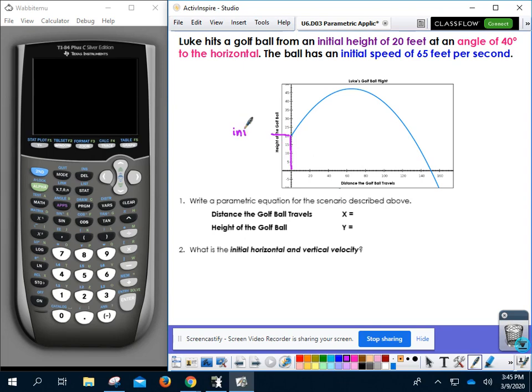that could be asked of you for a parametric application objective. So first of all, I'm just going to mark up this particular graph. Here is the initial height of 20 feet. Then it says he's hitting the ball at an angle of 40 degrees to the horizontal. So if I were to make a little right angle there, this angle we're seeing is 40 degrees. And then we've got some initial speed built into this as well.